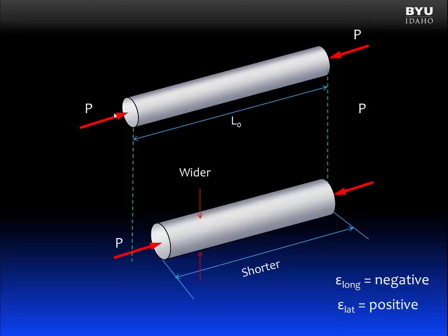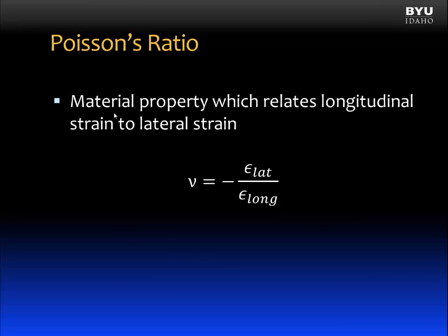Poisson's ratio is a material property which relates the longitudinal strain to the lateral strain. And it is shown as this. This is the Greek letter nu. And it is the symbol for Poisson's ratio. And it is equal to negative, the ratio of the lateral strain over the longitudinal strain. The negative sign is there because lateral strain is always the opposite direction of longitudinal strain.